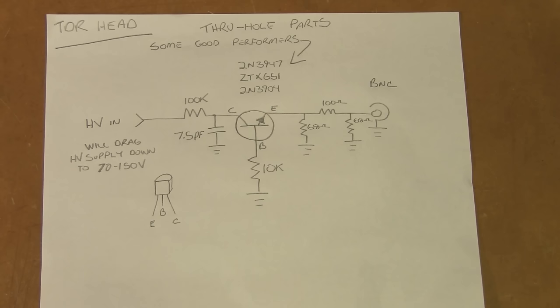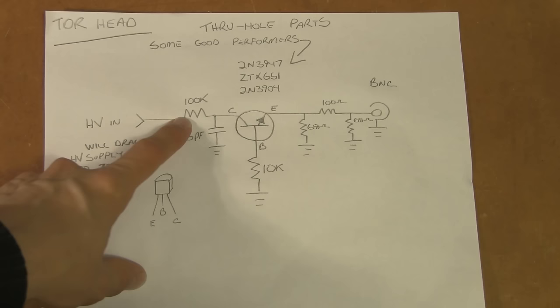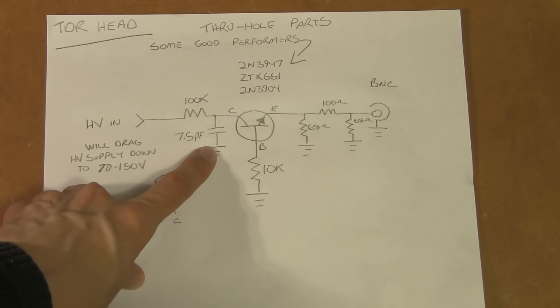Here we have the TDR head schematic. As you can see, it's very simple. The high voltage comes in here through this 100k resistor, and the 7.5 picofarad capacitor on the collector here sets the amplitude of the initial pulse.